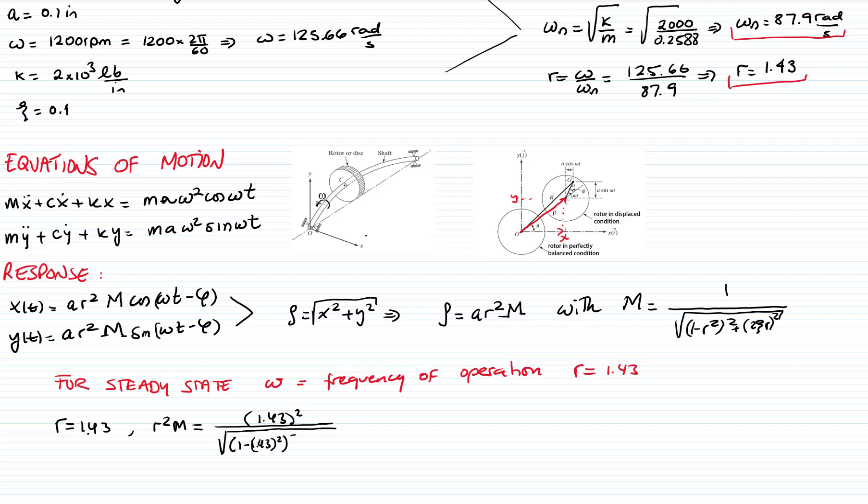And remember that ζ is 0.1. And I get a value of 1.889. And I have to multiply that value times A, which is 0.1, to get the value for the deflection of the shaft that I call ρ. And that gives me a value of 0.189 inches. So that will be the total deflection of the shaft in steady state condition.